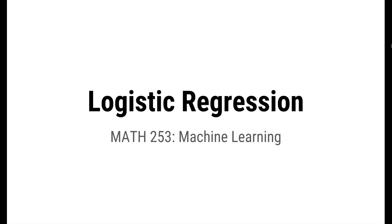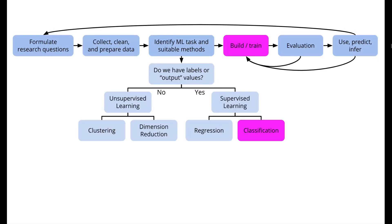In this video, we'll begin a new phase of our course where we focus on classification. Instead of building models to predict a quantitative response, we'll build models to predict categorical responses. A classic tool for modeling binary responses is logistic regression. We're still in the supervised learning branch, where we have output variables modeled as functions of predictors. The branch of supervised learning that deals with modeling categorical variables is called classification, because predictions are used to put cases into different classes.